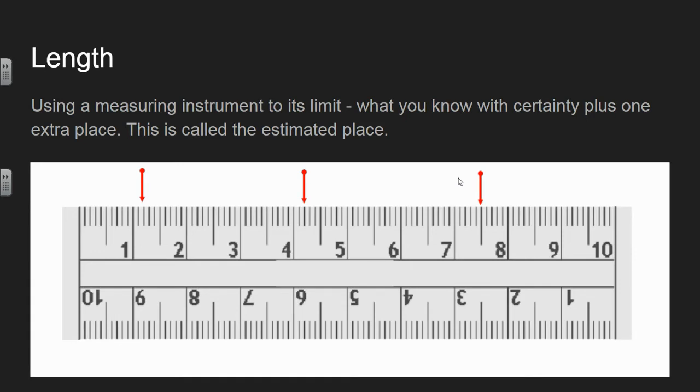When we're talking about length, we're measuring normally centimeters or meters, but a typical ruler has centimeter markings and then millimeter subgraduations. So we can use the centimeter marks and then the millimeters to measure an object. Here I have three different objects that are marked with red lines. And if we wanted to measure them, what we need to do is measure what we know and then estimate a final place.